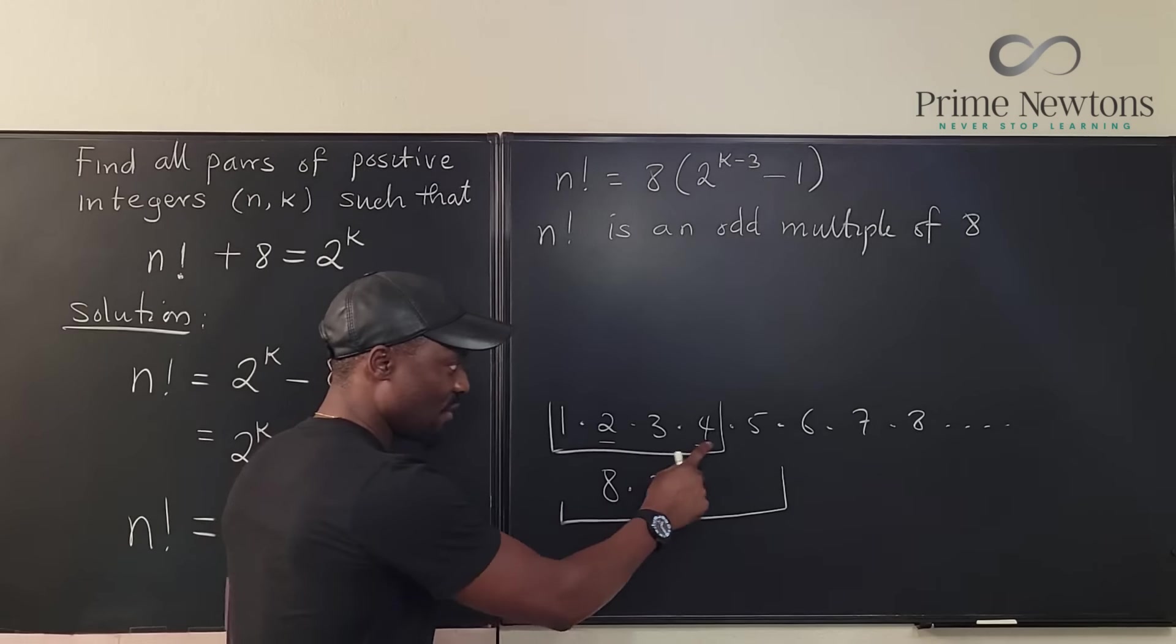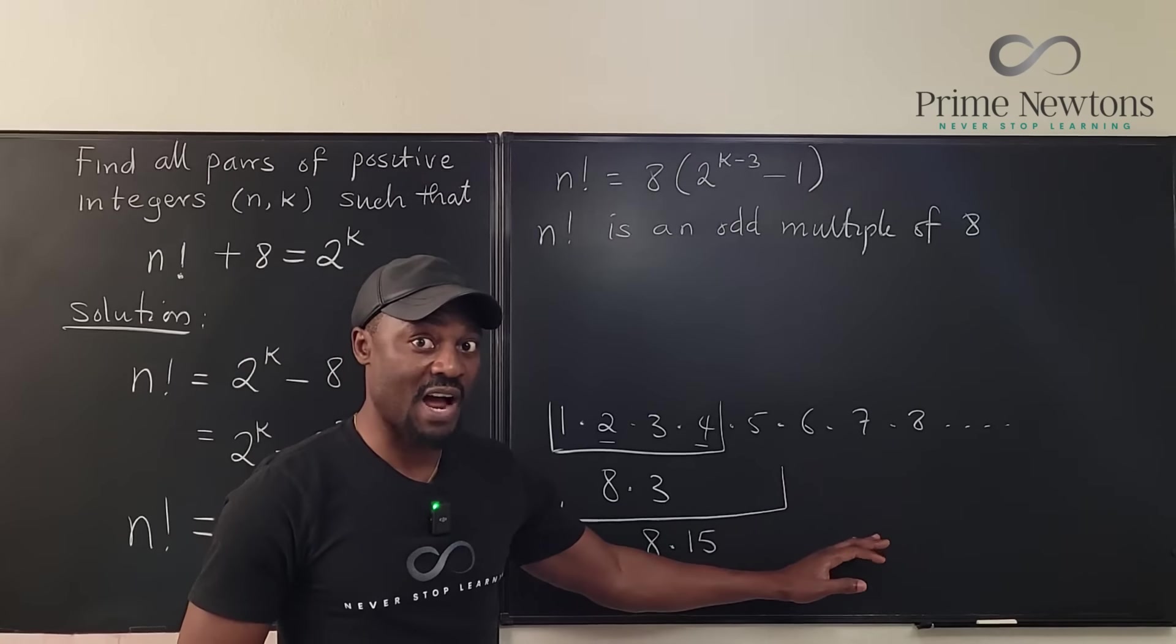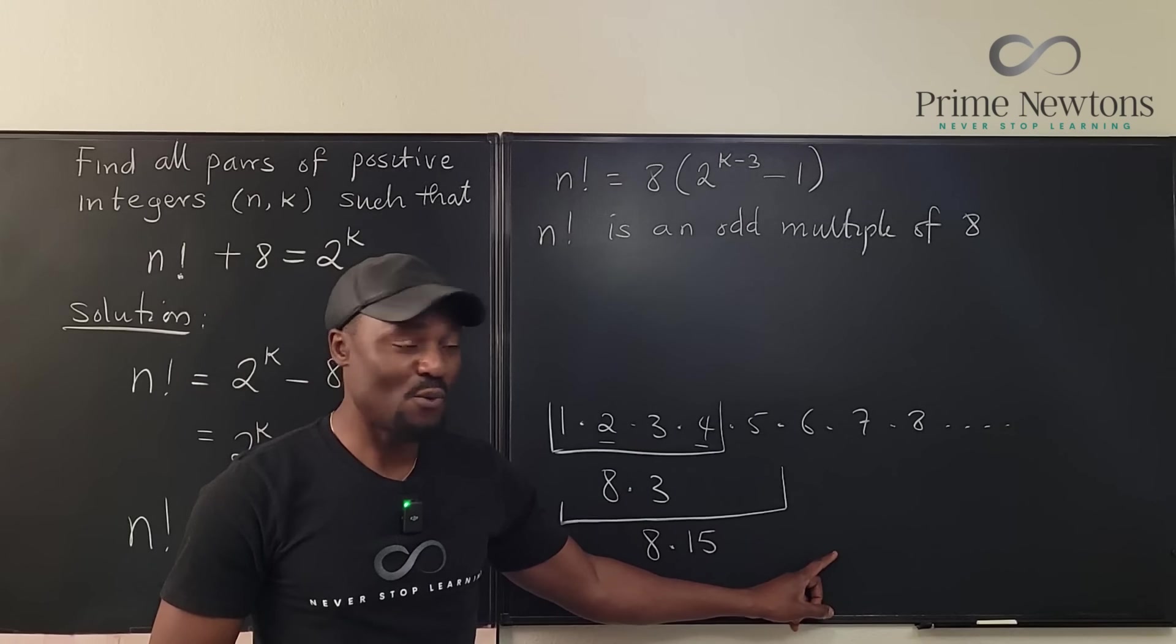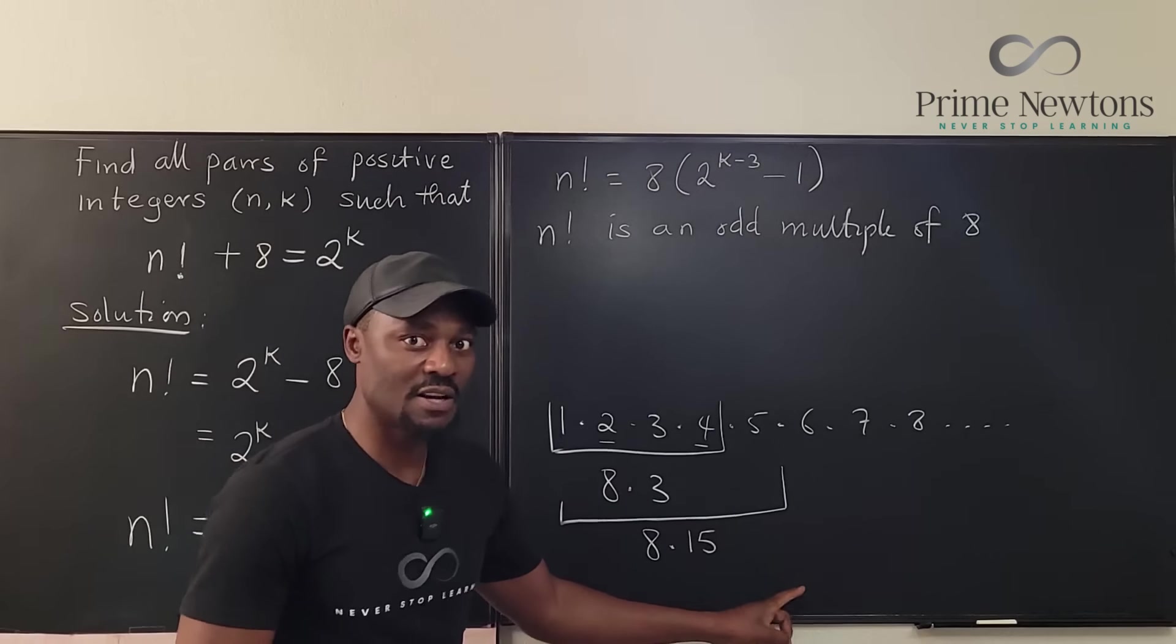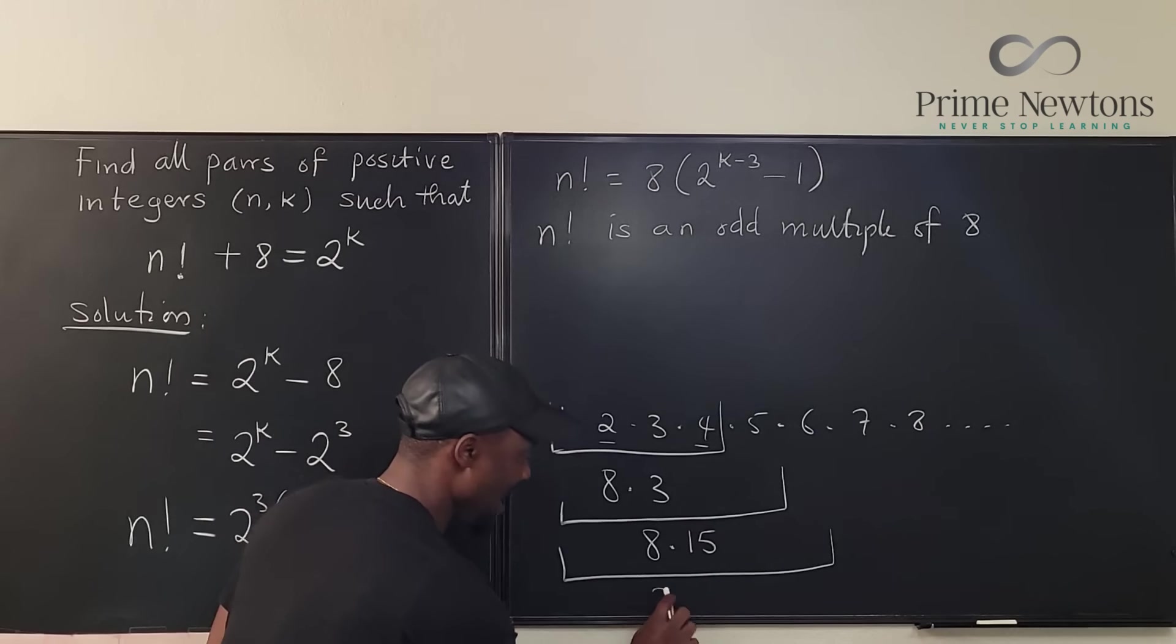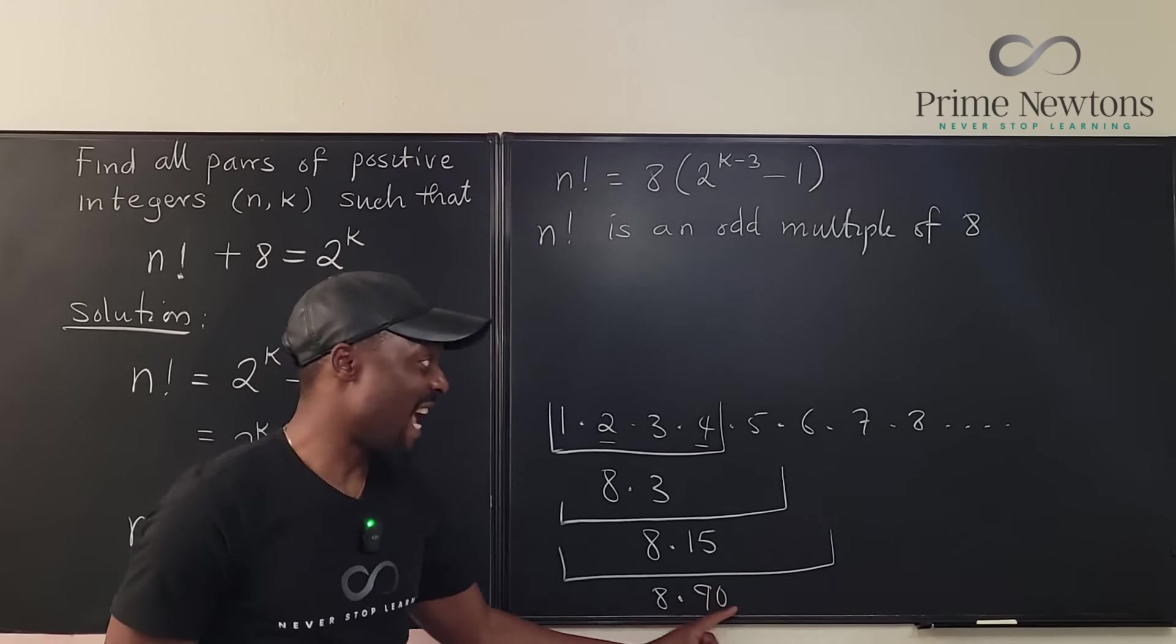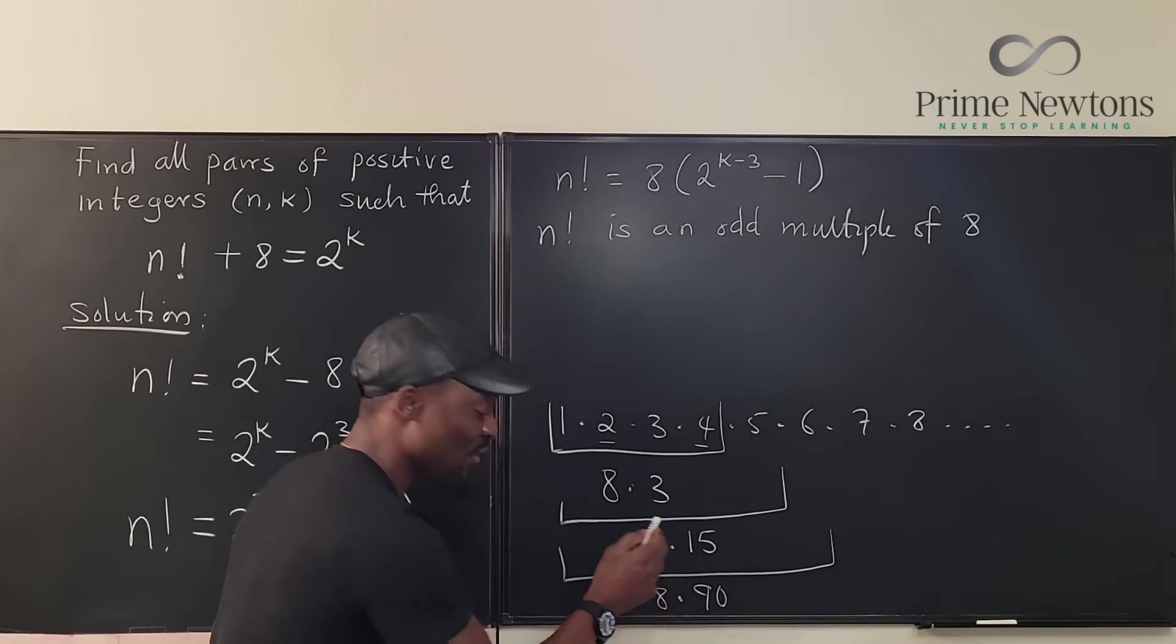Instead of stopping at four, what if I say I'm taking this? This is going to be 24 times 5, which is 120, so that's going to be 8 times 15. Can I go beyond 5? The problem is you can't, because as soon as you go beyond 5, another even number shows up. Once you see there's a 6 here, it will no longer be 8 times an odd number—it becomes 8 times an even number. If you pick 6, this is going to be 8 times what is 15 times 6, that's going to be 90. Now 90 is not an odd number, and anything you do beyond here is going to be all even. So these are the two candidates you can have.